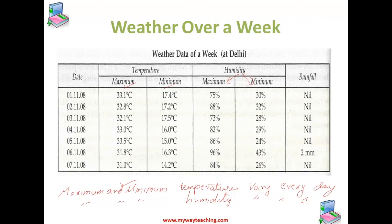It is possible that the maximum and minimum temperatures may be the same on some days of the week, but all the parameters are not the same on any two days. So there is a considerable variation in the weather data — such as temperature, humidity, rainfall, etc. — over a whole week.